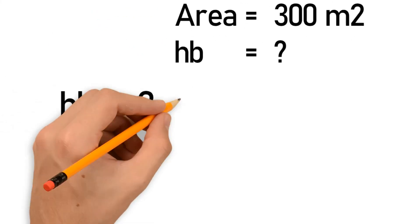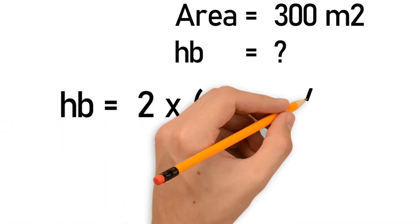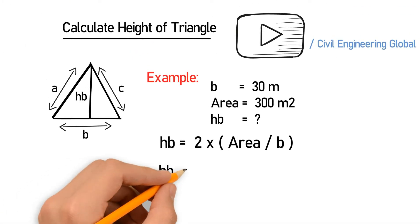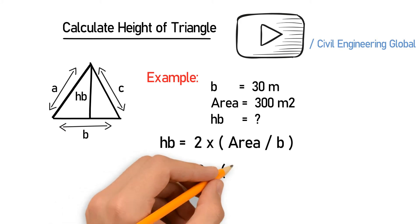HB is equal to 2 multiplied by area divided by B. So after putting the values, HB is equal to 2 multiplied by 300 divided by 30.